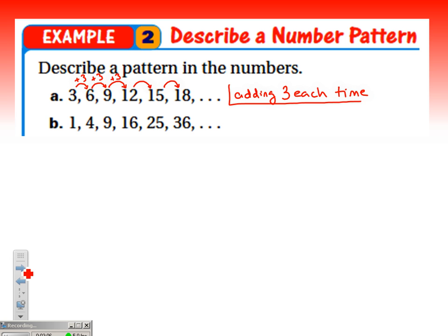For letter B, it's a little bit more interesting. To get from one to four, I add three. Then to get from four to nine, we add five. From nine to sixteen, we add seven. Sixteen to twenty-five, we add nine. Twenty-five to thirty-six, we're adding eleven. There's kind of a pattern within a pattern showing up here, because what we're adding is growing by the same amount each time.